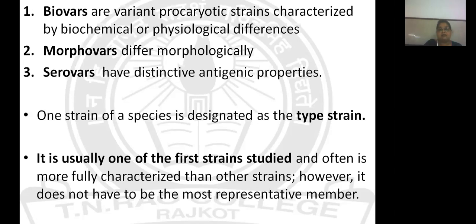BioVar are variants of prokaryotic strains that differ in their biochemical and physiological properties — for example, slight changes in temperature tolerance, pH preferences, or biochemical characters. MorphoVar are strains that differ in their morphological characters. Serovar are strains that differ in their antigenic properties, meaning they have certain proteins or markers different from other members of the same species.